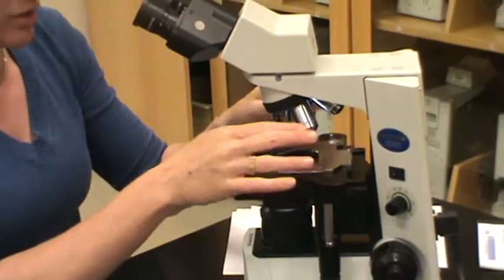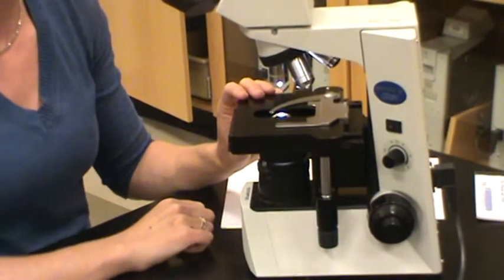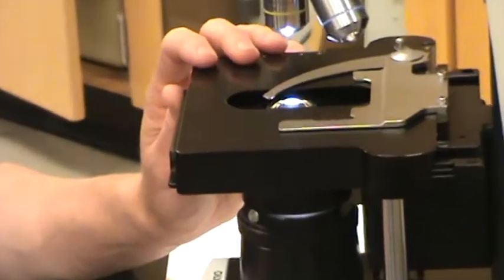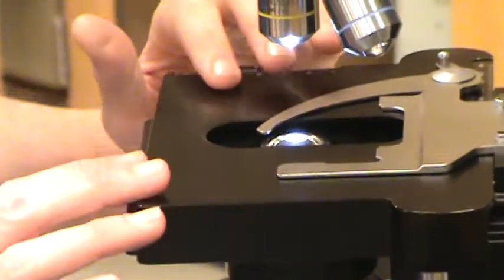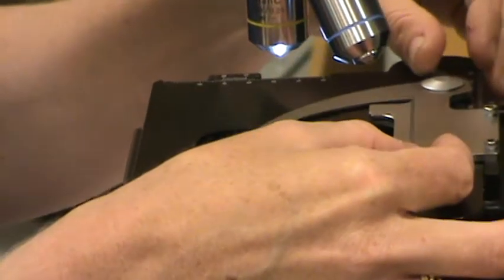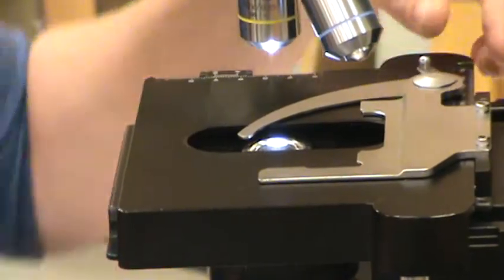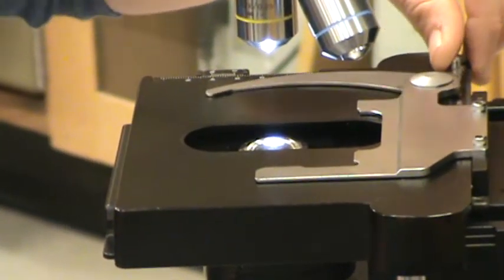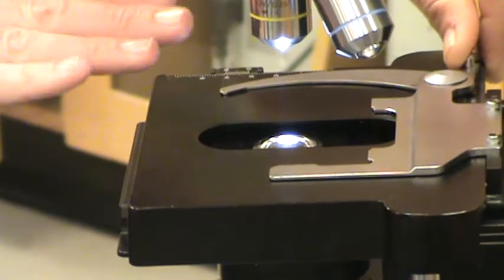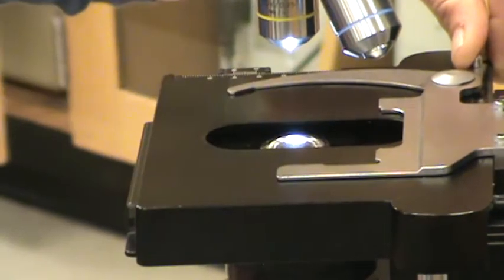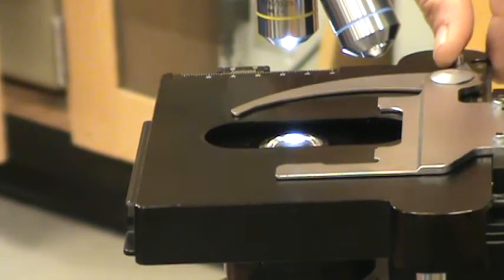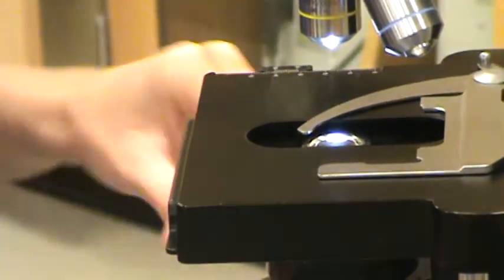Beneath the objectives is this black piece called the stage. This is where you will place your slide. A piece of the stage is silver in color and is called the mechanical stage, and it has a movable clamp that allows enough space to accommodate a slide when the clamp is open and then helps to secure the slide in place when you close it.